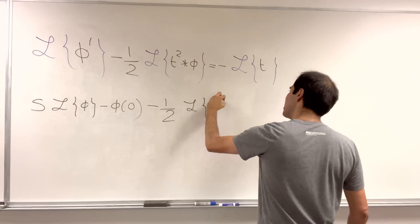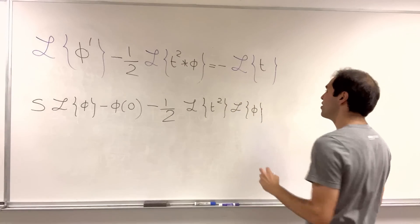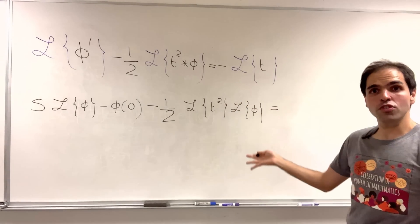So, it becomes L of t squared times L of phi, that's why it's so important, and minus Laplace transform of t.